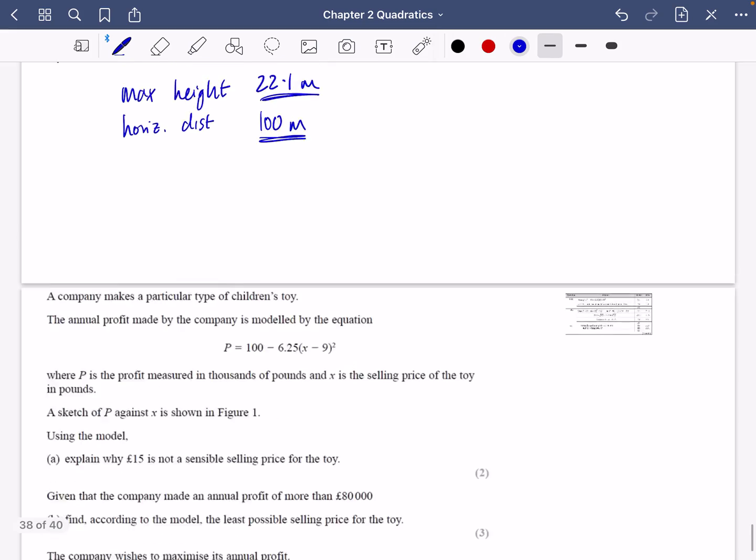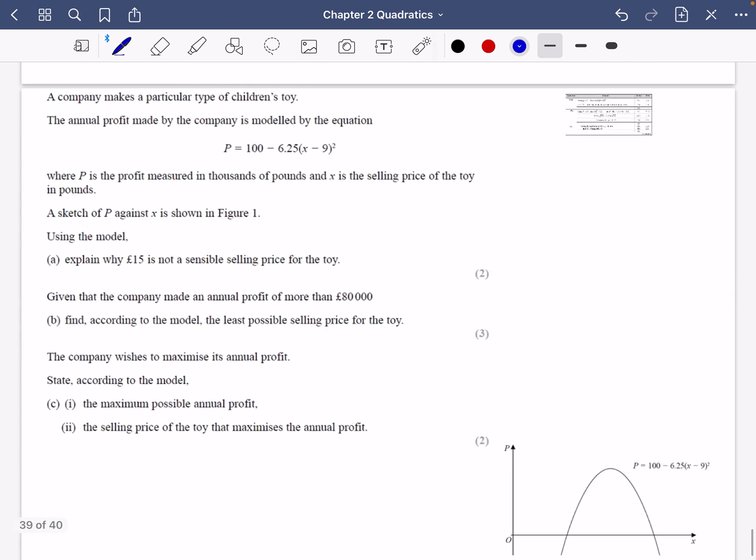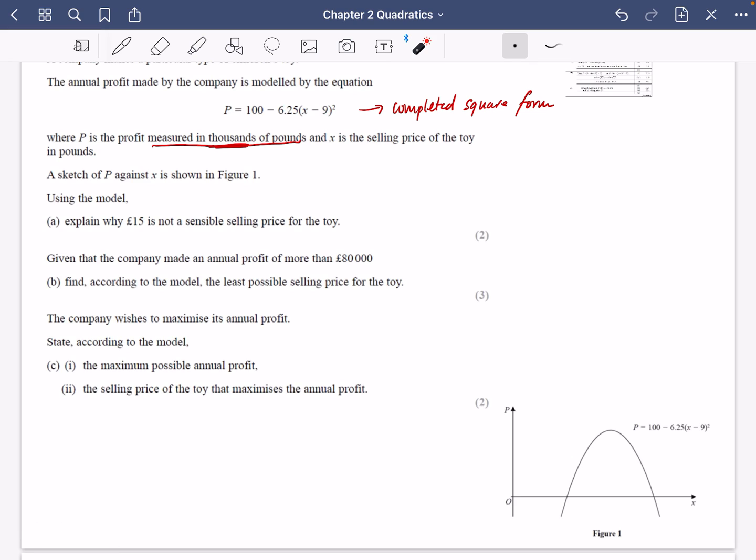Okay, we have got the mark scheme. I didn't put the mark scheme in for that one, but it's definitely all the right answers for this. One last question here, which is, again, you can see it's something to do with a quadratic and it's modeling. It says a company makes a particular type of children's toy. The annual profit made by the company is modeled by this equation here. First thing that I would already note is that it is in completed square form. I've done this with students and they love expanding this, but it's already in the best form, so don't change it. It also says that P is the profit measured in thousands of pounds. People always forget this. And x is the selling price of the toy in pounds. A sketch of P against x is shown in figure one, which I've got down here.